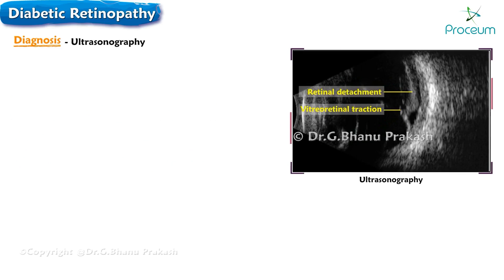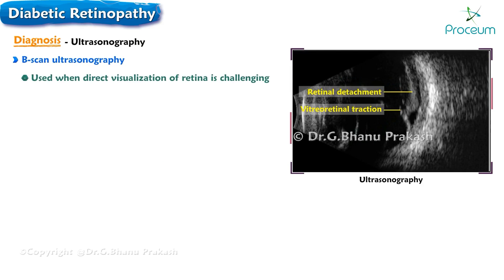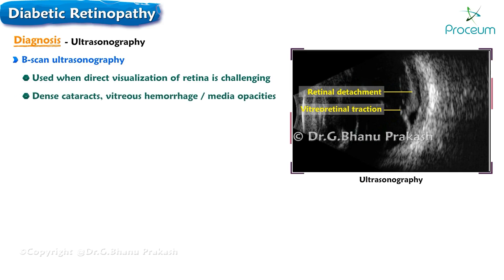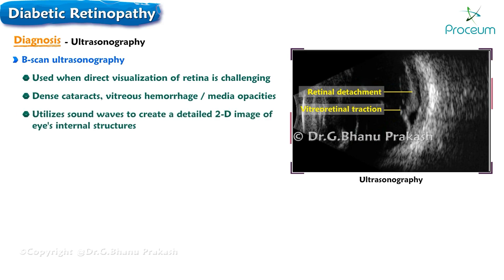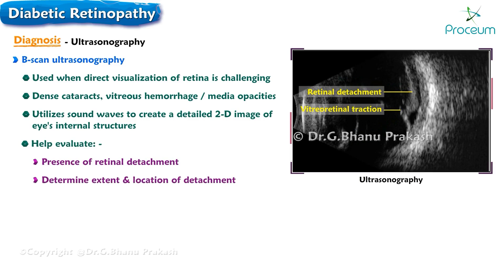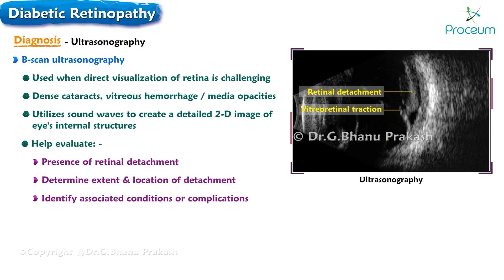Ultrasonography, specifically B-scan ultrasonography, is a valuable imaging technique used in situations where direct visualization of the retina is challenging — such as when there are dense cataracts, vitreous hemorrhage, or media opacities. B-scan ultrasonography utilizes sound waves to create a detailed two-dimensional image of the internal structures of the eye, enabling evaluation of retinal detachment, its extent and location, and any associated complications.